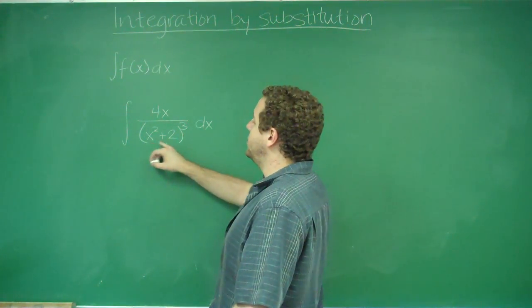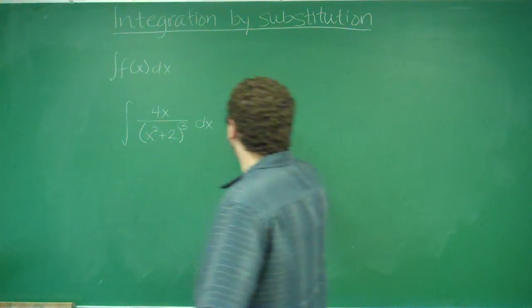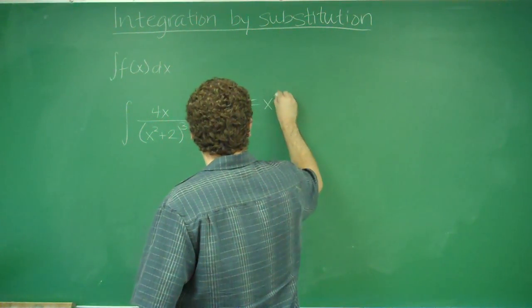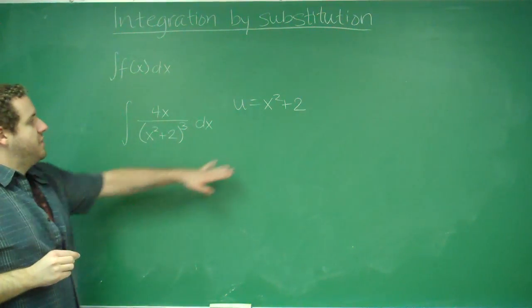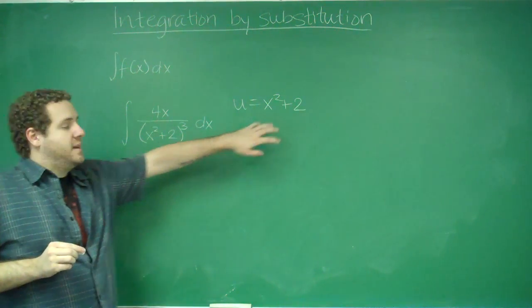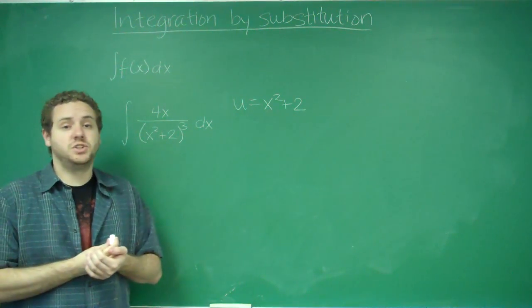In here, you can see if I called u everything in this parenthesis, x squared plus 2, the derivative of that would be 2x, and this is only off by a constant from 2x at the top, so that's a good one to choose.